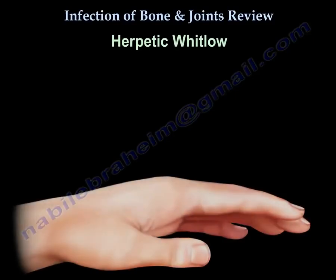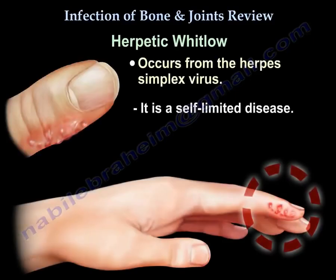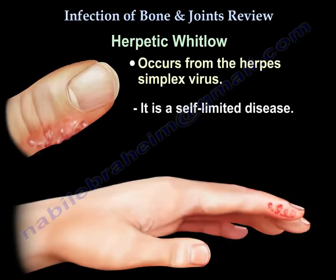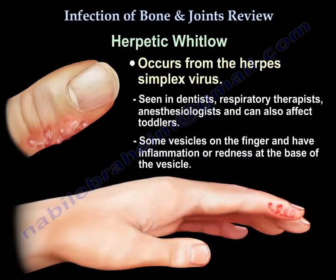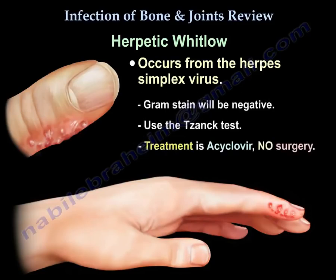Herpetic whitlow is a self-limited disease that occurs from the herpes simplex virus. You can see it in dentists, respiratory therapists, and anesthesiologists. It can also affect toddlers. There are some vesicles on the finger with inflammation or redness at the base of the vesicle. The gram stain will be negative. Use the Tzanck test, and the treatment is acyclovir. No surgery.